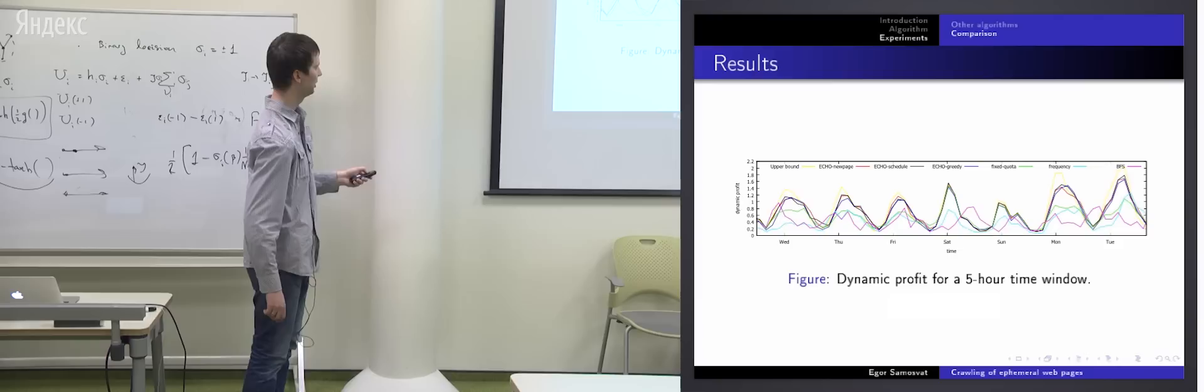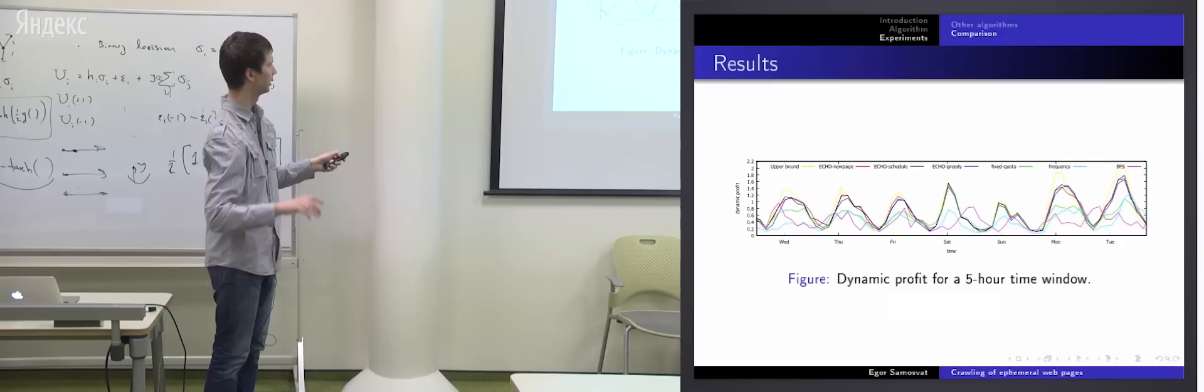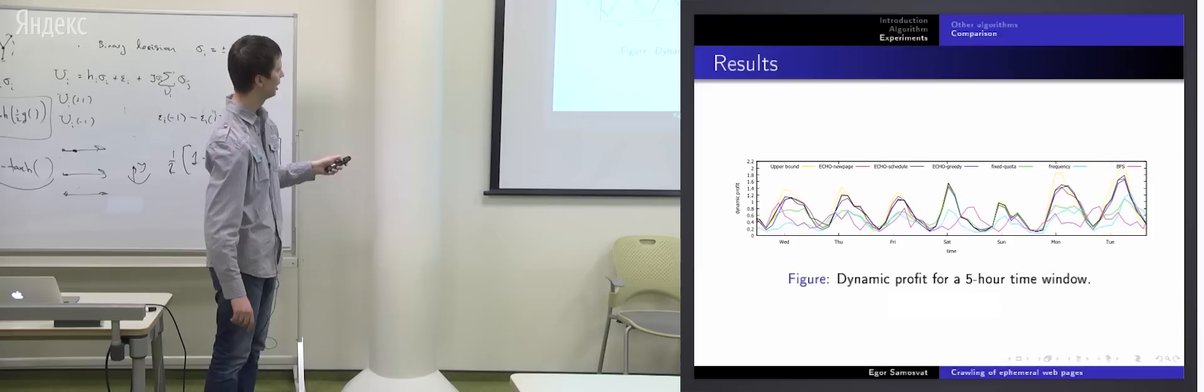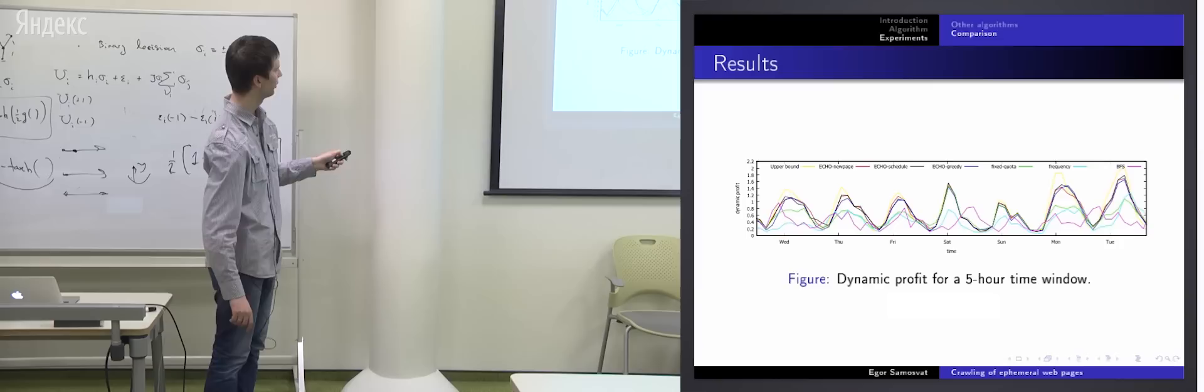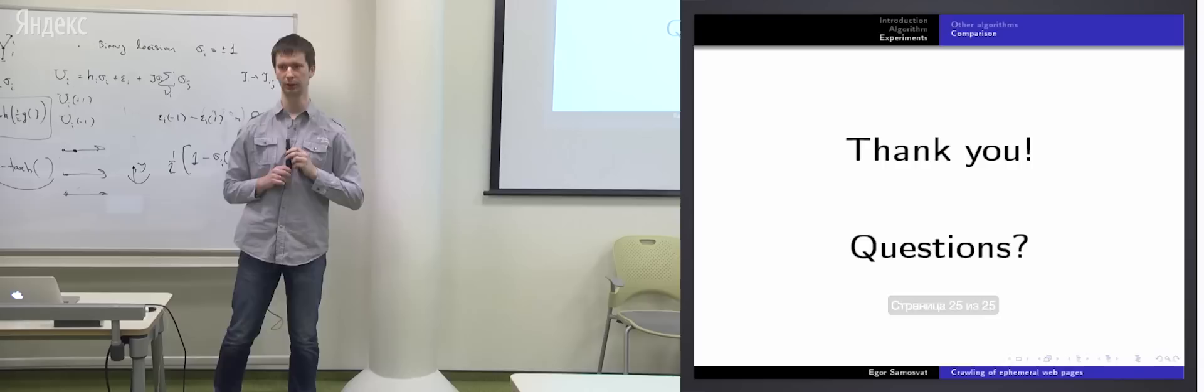Okay. And this is dynamic profit for five hour time window. Here you can see these temporal effects. That the most of pages are published like at 12 o'clock, like this. And then in night, less pages are published. Yellow line is upper bound. And echo new pages is also yellow. It's hard to distinguish curves on this. So, thank you. If you have any questions, please ask me.